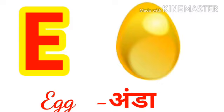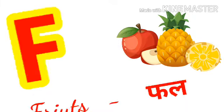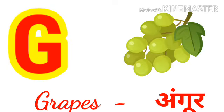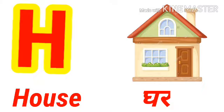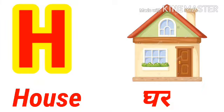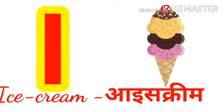egg means anda. F for fruit, fruit means phal. G for grapes, grapes means angoor. H for house, house means gar. I for ice cream,